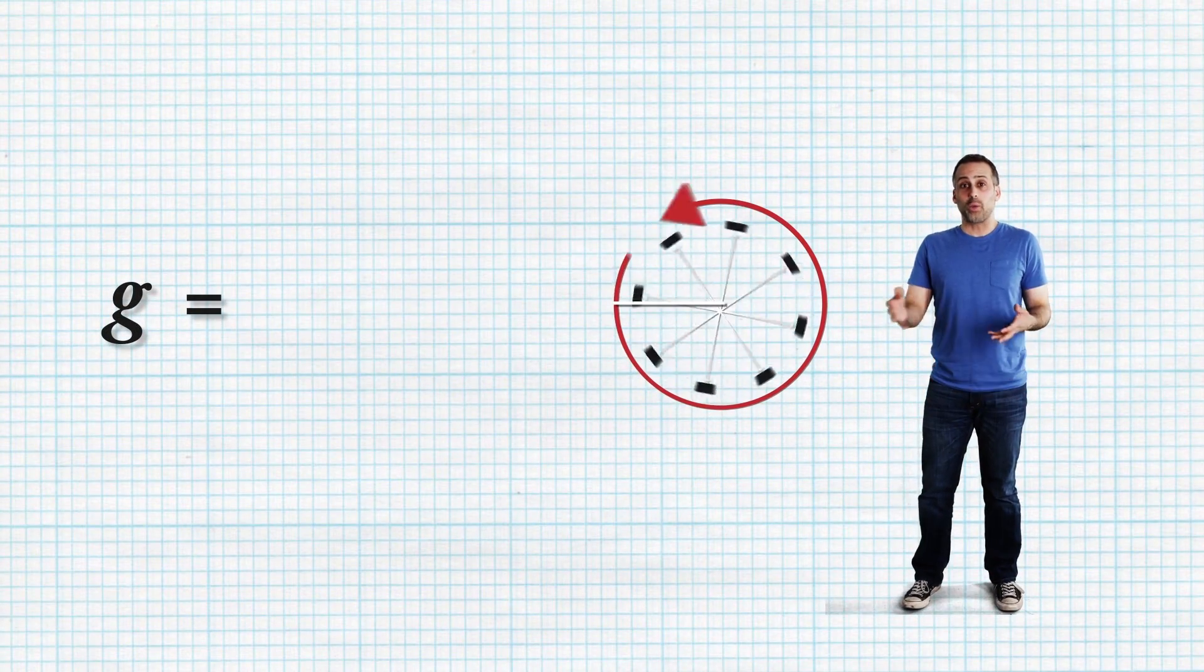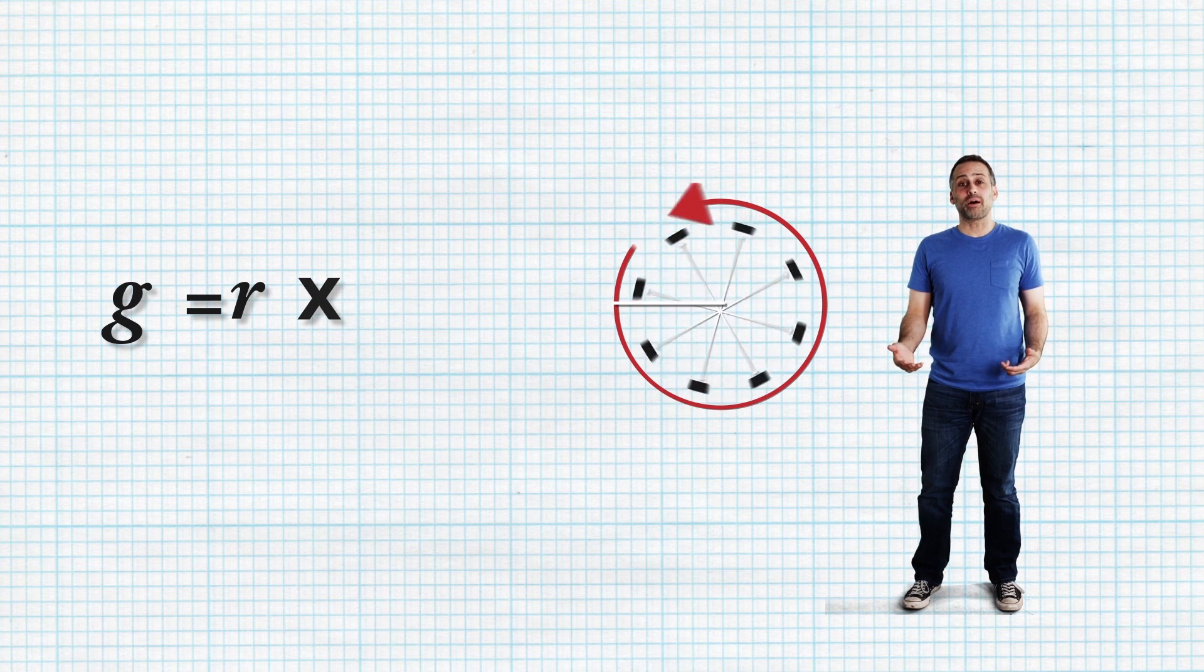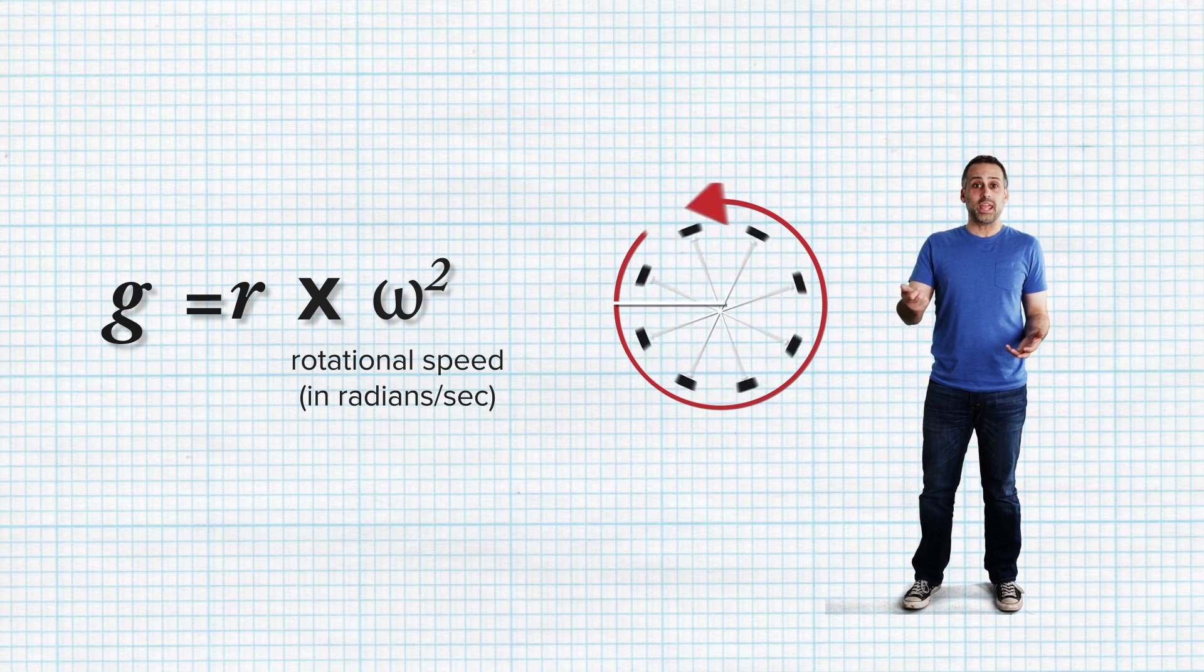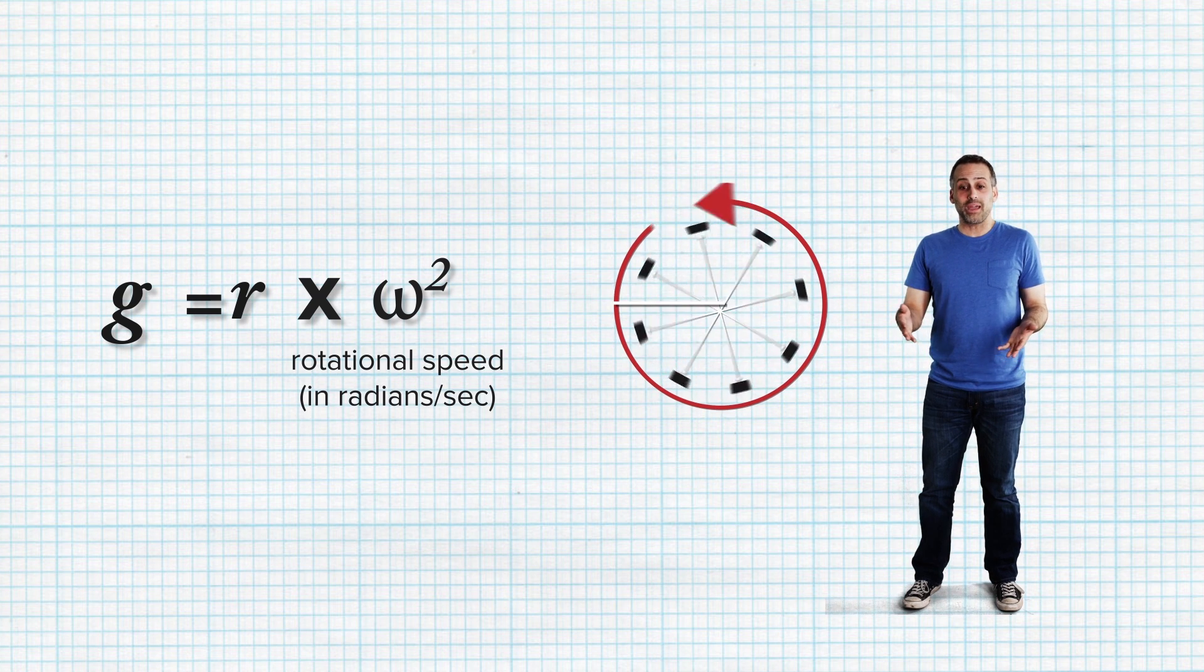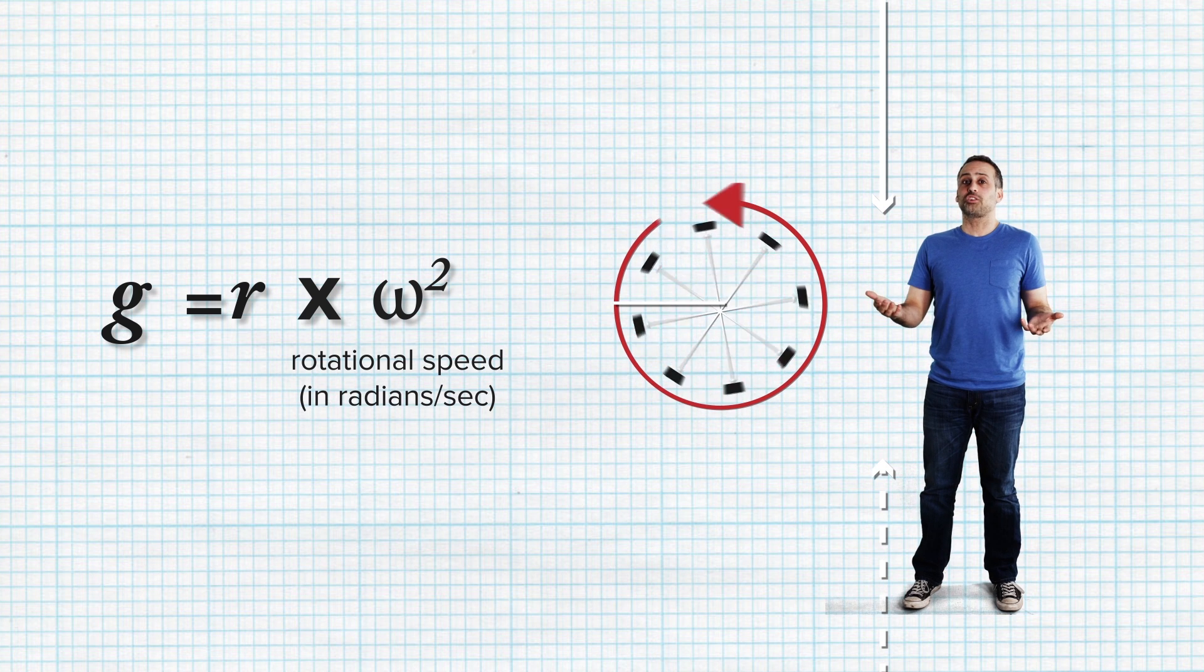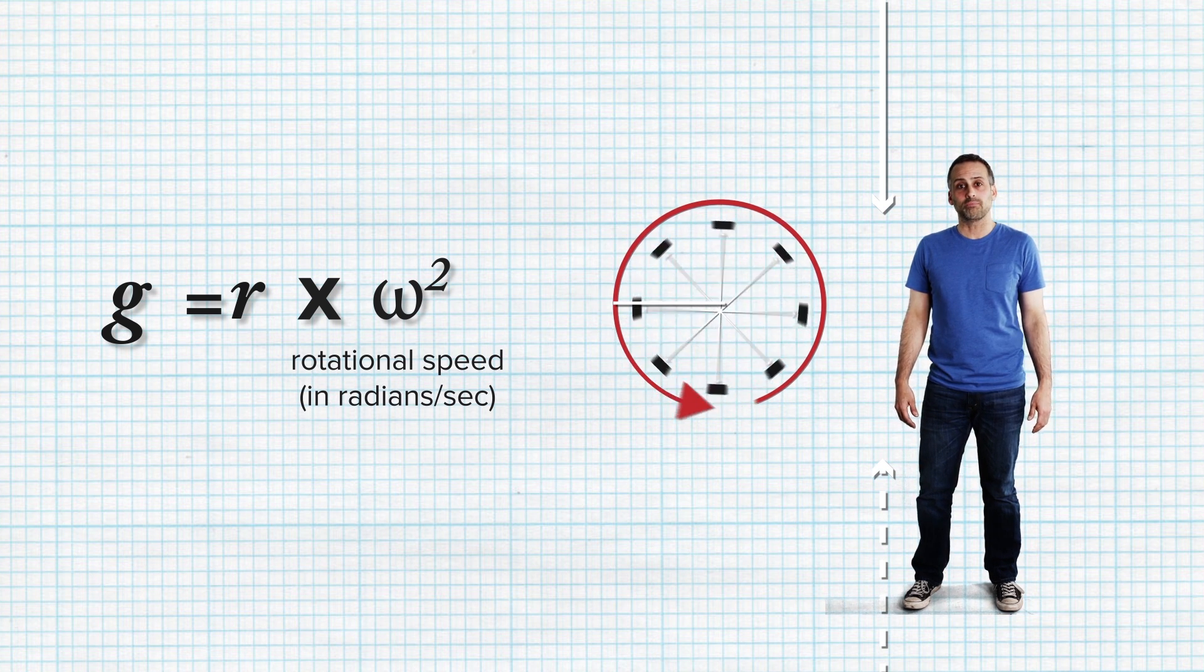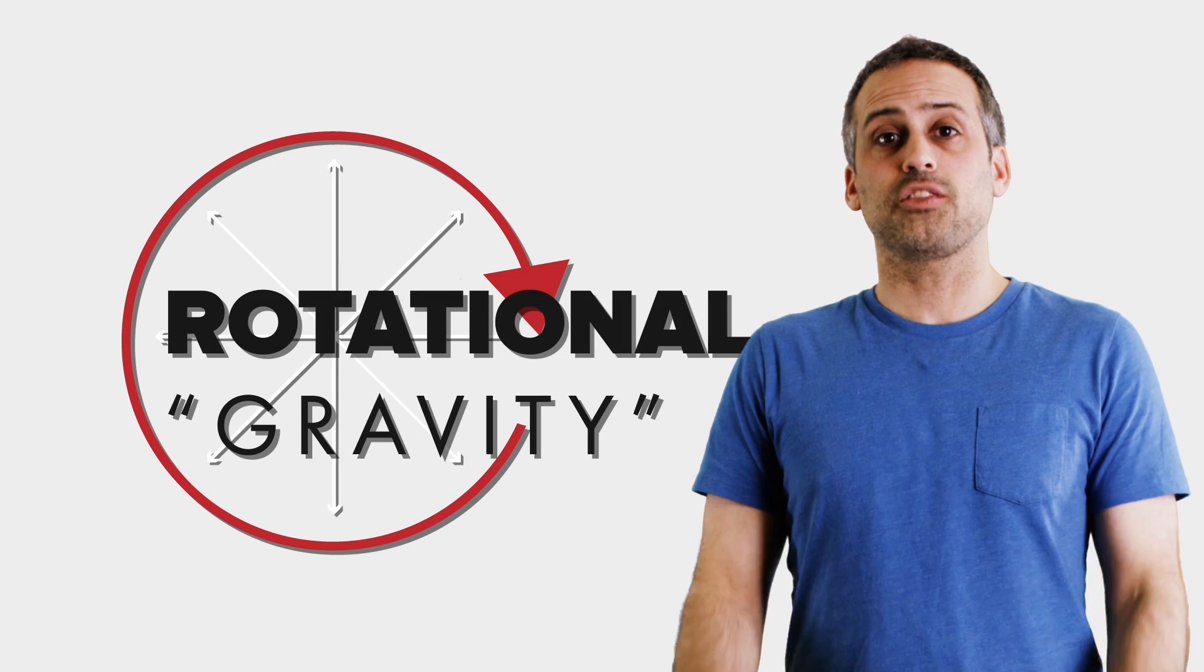It turns out that there's a simple formula for how big the effective surface gravity produced by this rotating structure would be. It's just the radius of the rotating structure multiplied by the square of its rotational speed in radians per second. If you adjust the radius and rotation rate of the room, you can make that force from the wall on your feet just as big as the force from the ground currently on your feet, and thus simulate Earth's 1g of surface gravity. Now, keep all this in mind as we gut check the physics of the following sci-fi examples.